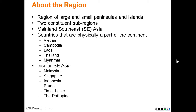About the region: it consists of large and small peninsulas and islands with two constituent sub-regions. Mainland Southeast Asia — countries that are physically part of the continent — includes Vietnam, Cambodia, Laos, Thailand, and Myanmar. Insular Southeast Asia — the island region — includes Malaysia, Singapore, Indonesia, Brunei, Timor-Leste, and the Philippine Islands.